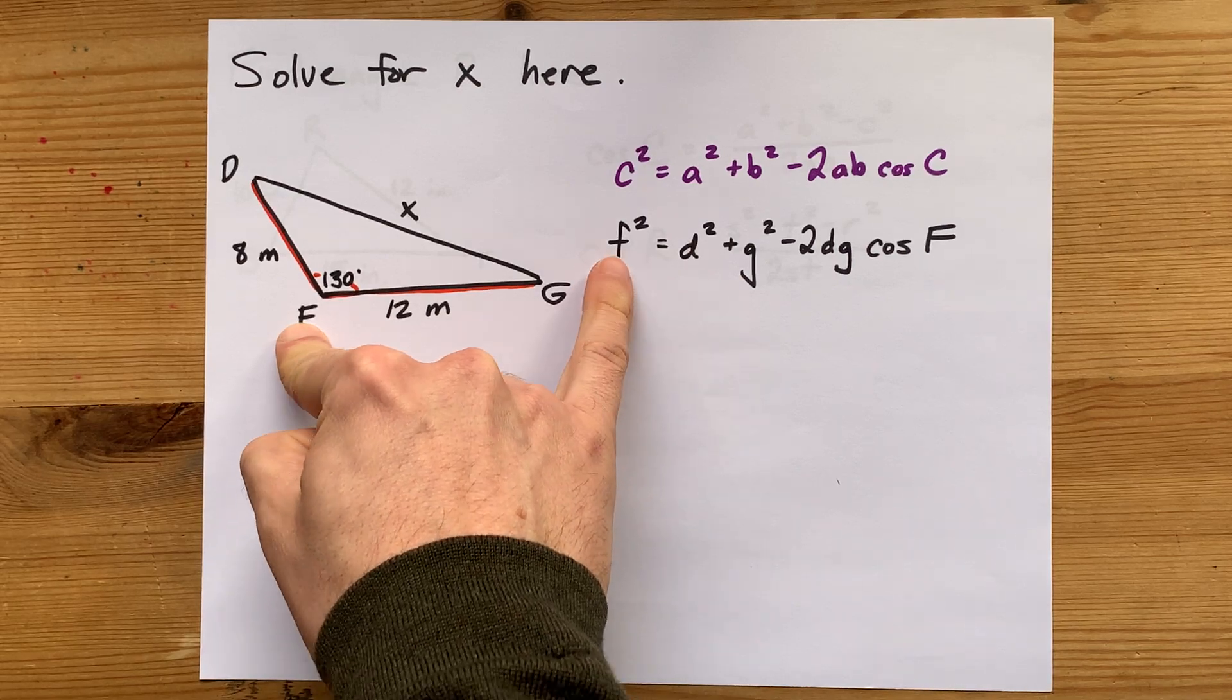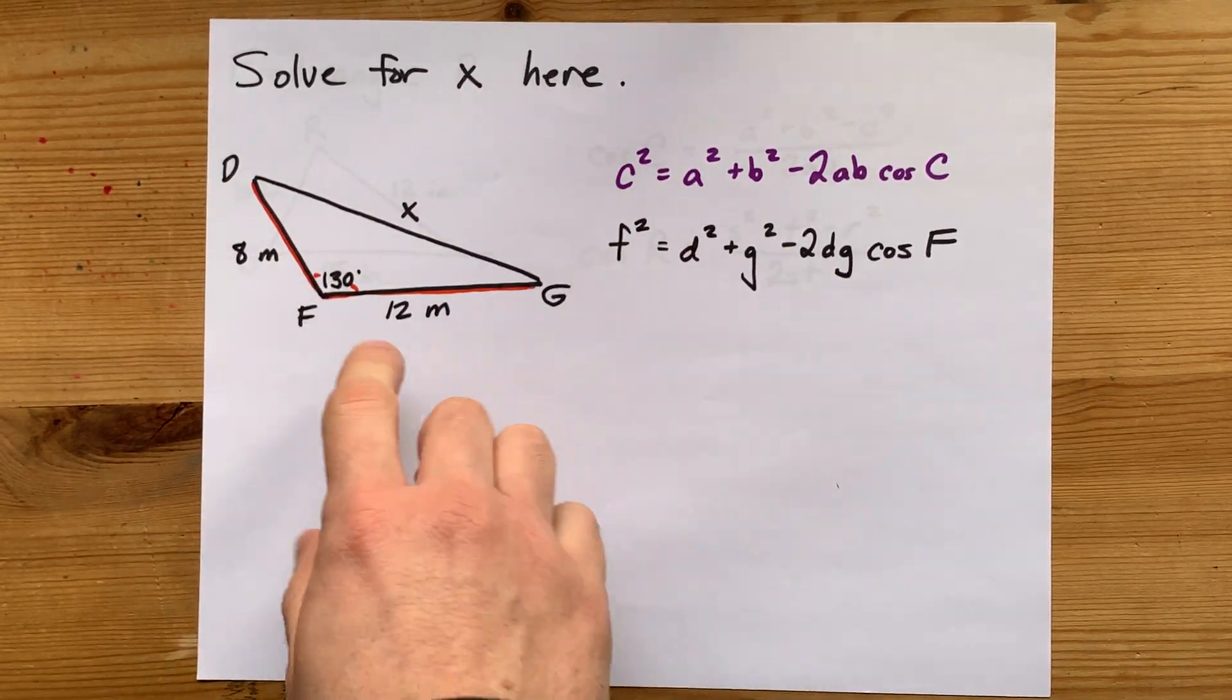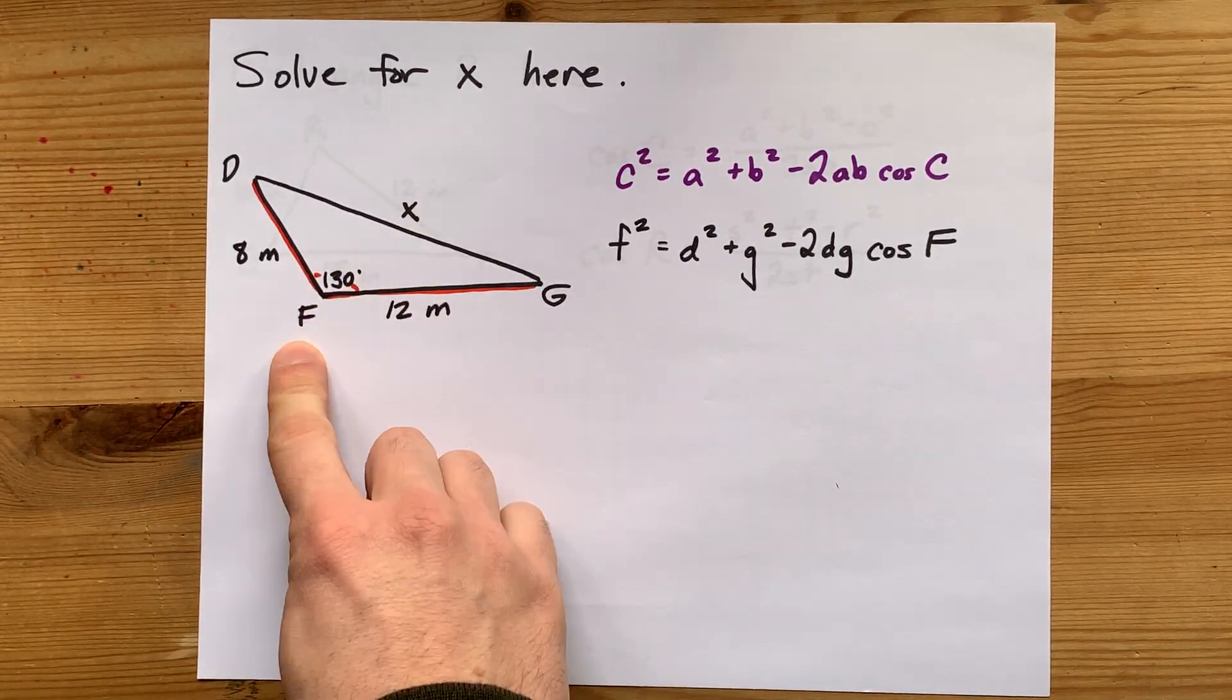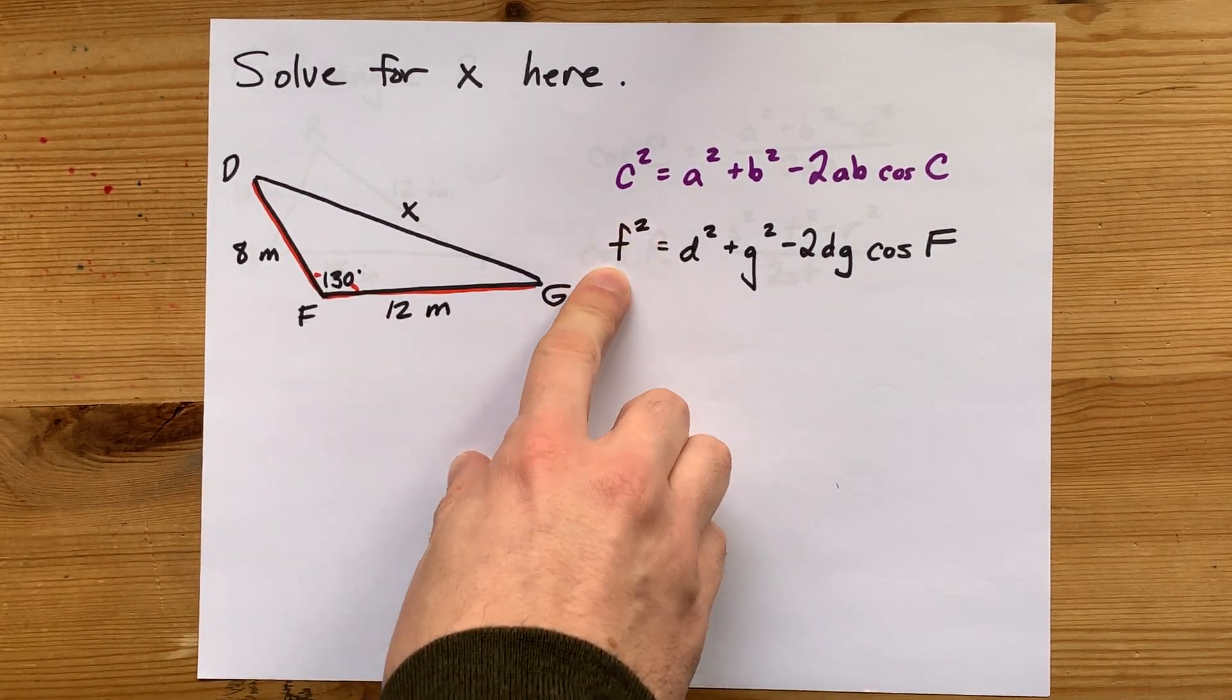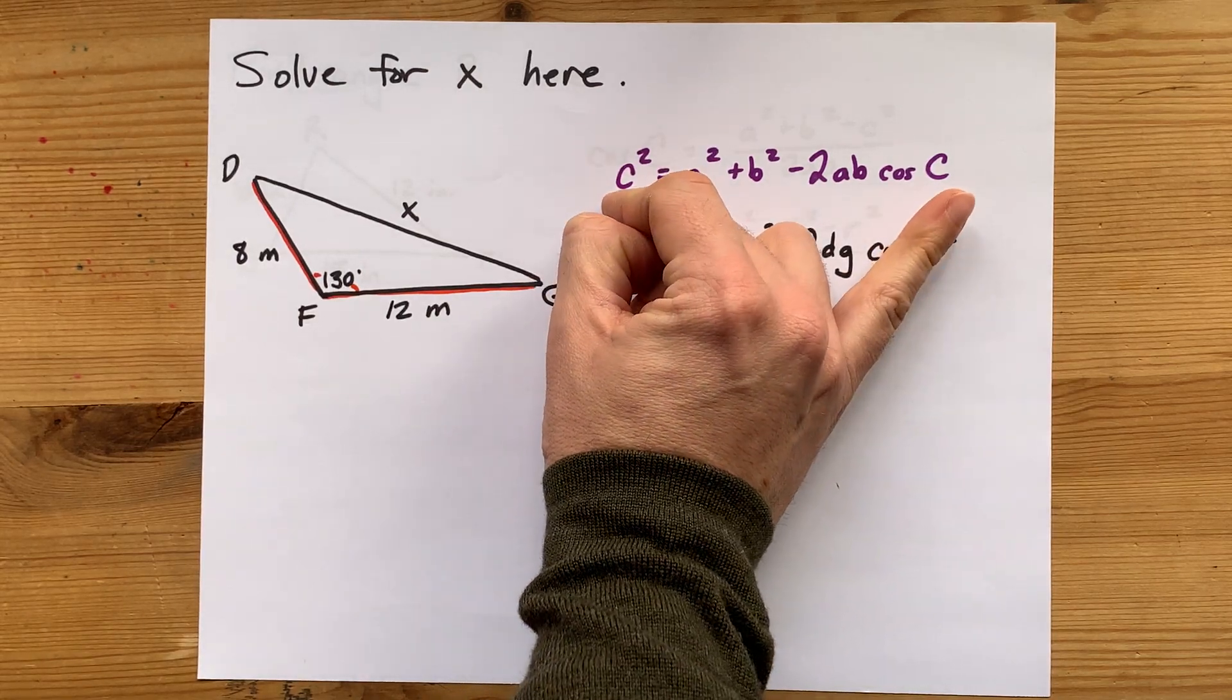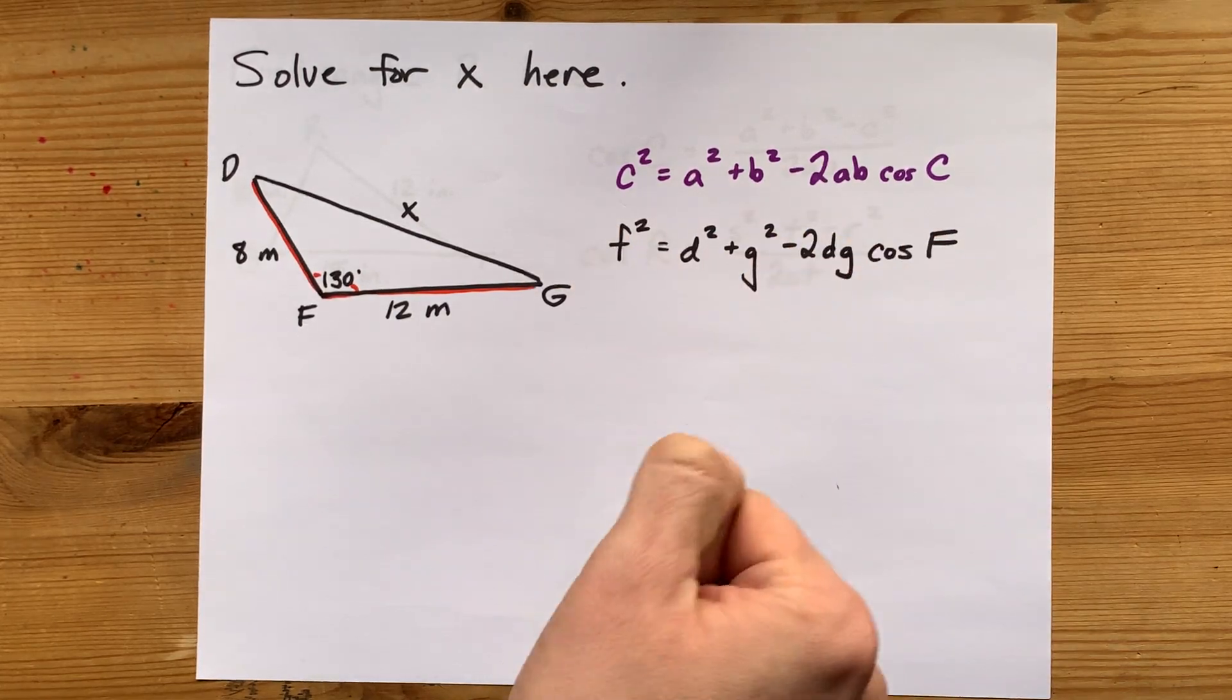It's generally a notation thing that the side length across from an angle is the lowercase version of that angle. So if I'm solving for F squared, the only actual other requirement is that that angle is the same letter, but the capital letter because it's an angle.